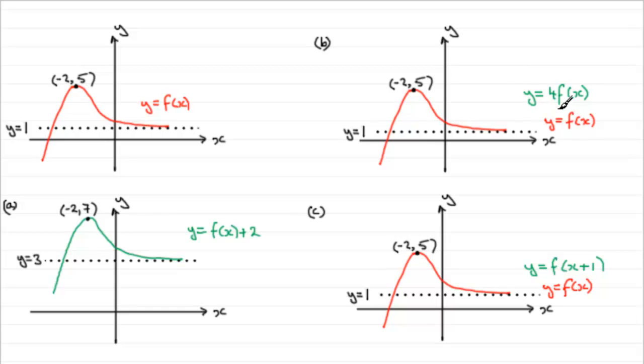And what this does is it stretches the graph by a scale factor of 4 parallel to the y axis. And any points on the x axis, like this one here, stay invariant. That is, they just stay where they are. So when it comes to drawing this one, this point's going to be at the same place. This point here, however, is going to be stretched out by a scale factor of 4. So this y value of 5 is now going to be pulled to 5 times 4, 20, way up here.